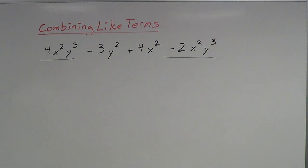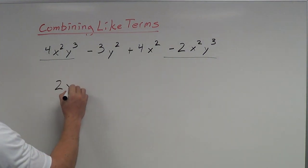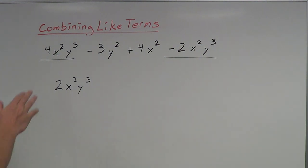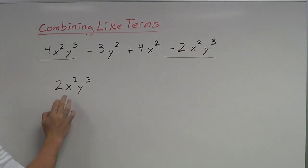Now I need to add or subtract the coefficients. 4 minus 2 is 2. Notice that the coefficient changes, but the exponents and the variables, they do not change. x²y³, x²y³, x²y³. The variables and the exponents did not change. It was only the coefficients.